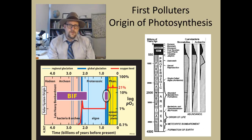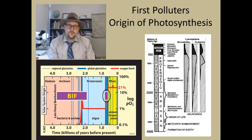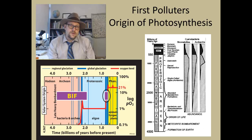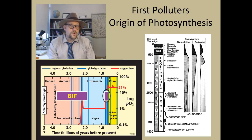Now the one thing that everyone seems to agree on is when the origin of photosynthesis occurred. It really took off during the boundary between the Archean and the Proterozoic, when the atmosphere began to be filled with oxygen. Hence these early single-celled photosynthesizing lifeforms were the first polluters of the planet, and we have been breathing in their pollution — oxygen — ever since. The evidence for this change is in the fact that banded iron formations, or BIFs, are not found during the Proterozoic, except for some brief intervals of global glaciation at the end of the Proterozoic.